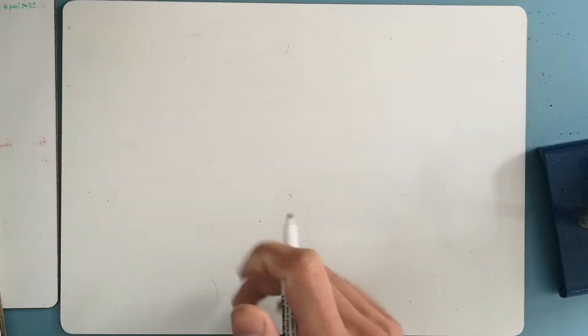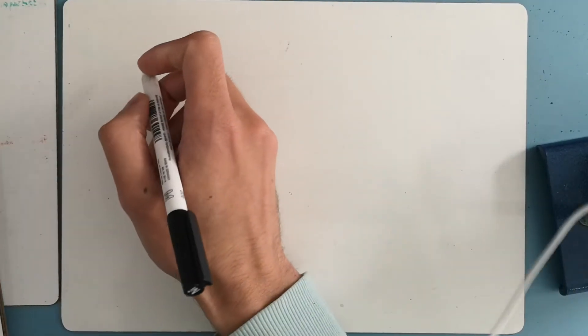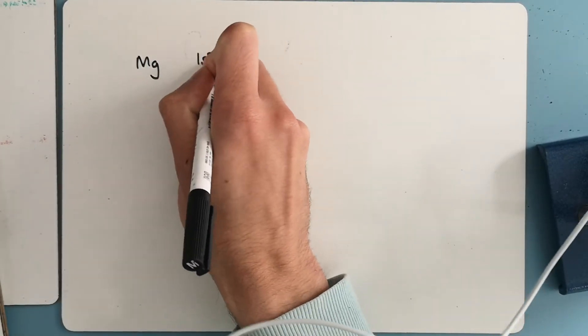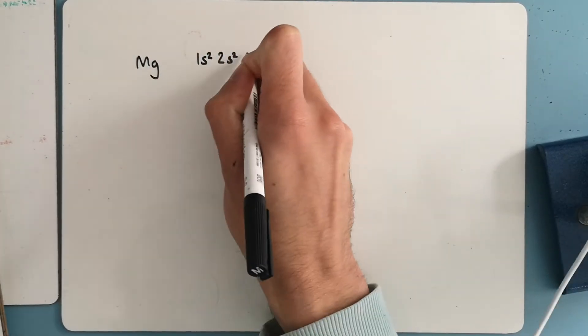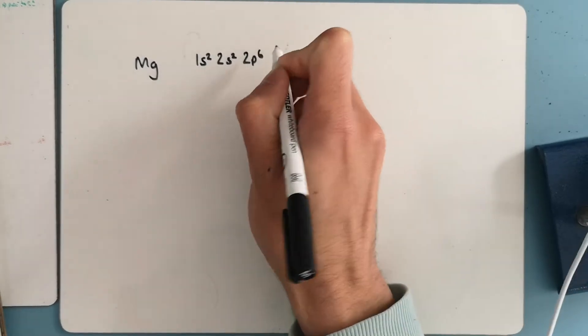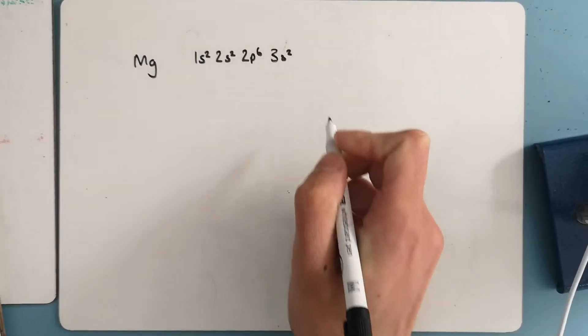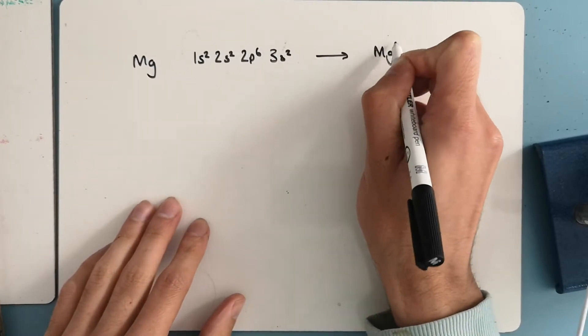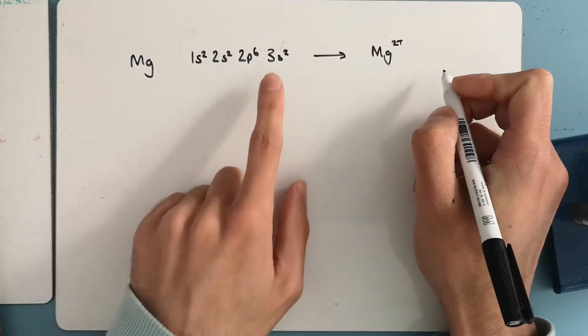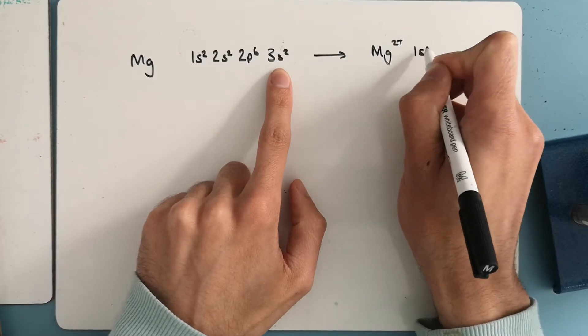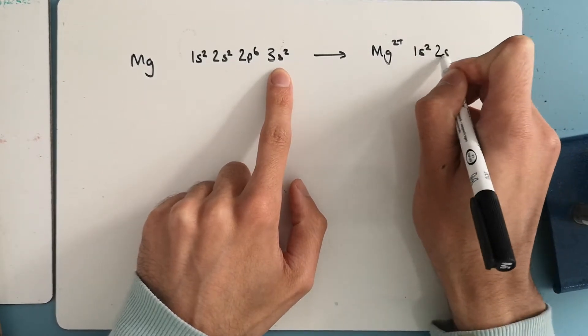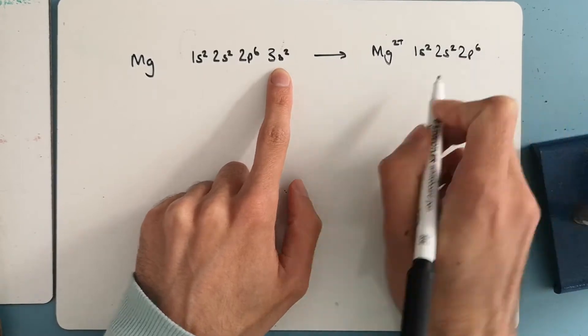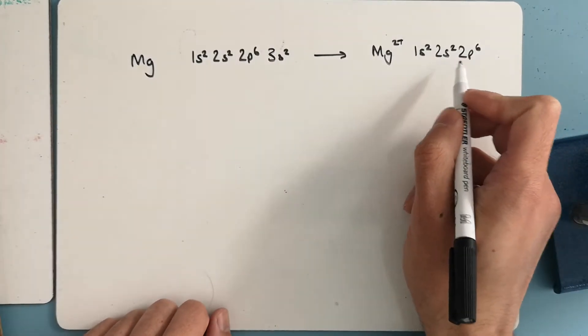So if we start with our oxidation, what we need to look at is their electron arrangement. If I take magnesium to begin with, magnesium is 1s2, 2s2, 2p6, 3s2, and that is going to form the Mg2+ ion. It loses these two electrons from the 3s orbital. So it goes to 1s2, 2s2, 2p6.